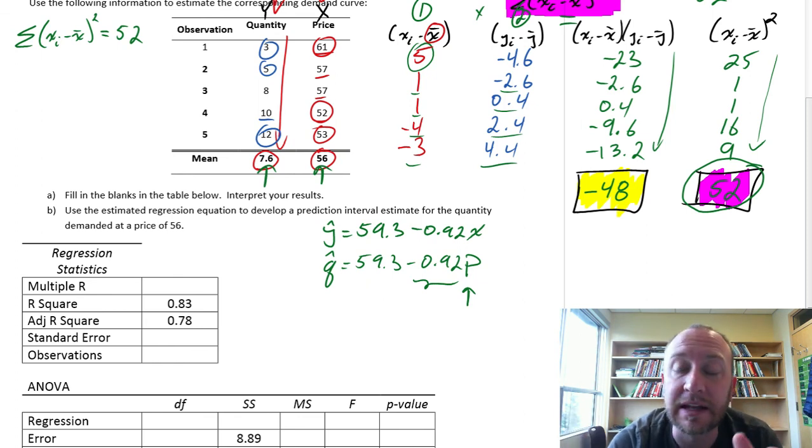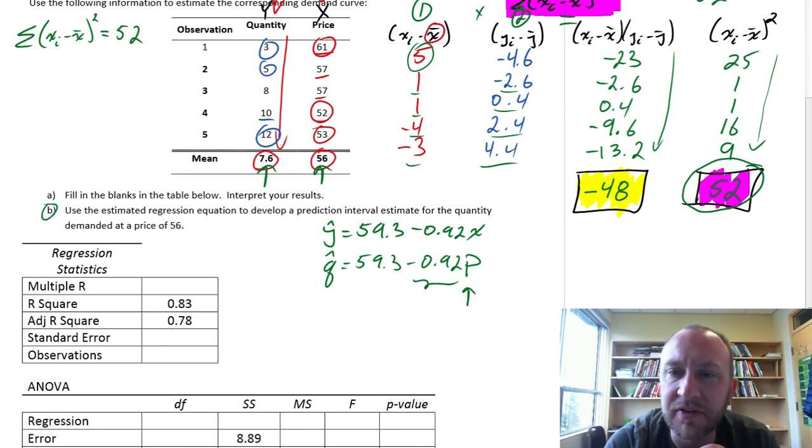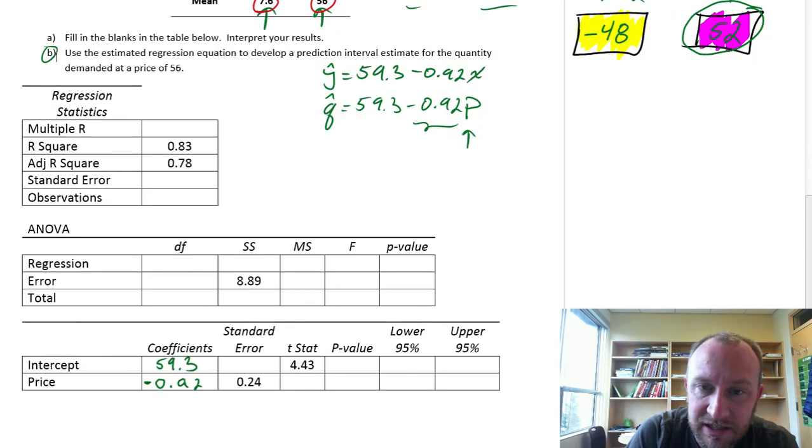We'll also look at developing confidence interval estimates and prediction interval estimates in part B, but I'll put that off until the end, once we've got everything put together, because there's not a lot of point doing these estimates until we know for sure our relationship is statistically significant. For that, we'll do hypothesis testing and calculate these interval estimates for our coefficients.